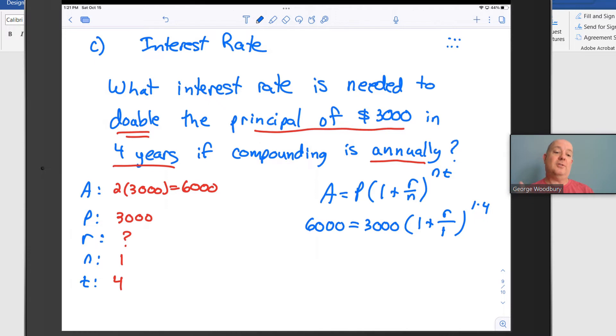I know that that is the fourth power. I know that r divided by 1 is just r. So in addition to that, I'm going to divide both sides by 3,000, and 6,000 divided by 3,000 is 2. That gives me this equation: 2 equals 1 plus r to the fourth power.